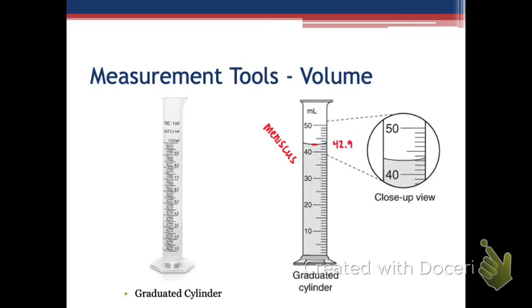You could have put 43.0 and that would have been an acceptable value. You could have even said 42.8, depending on how you see it. That's the thing about measurements — it's all about how you read it. 42.0 would not have been acceptable because that's all the way down here, and neither would 44.0. We really have to be careful about how we read that.